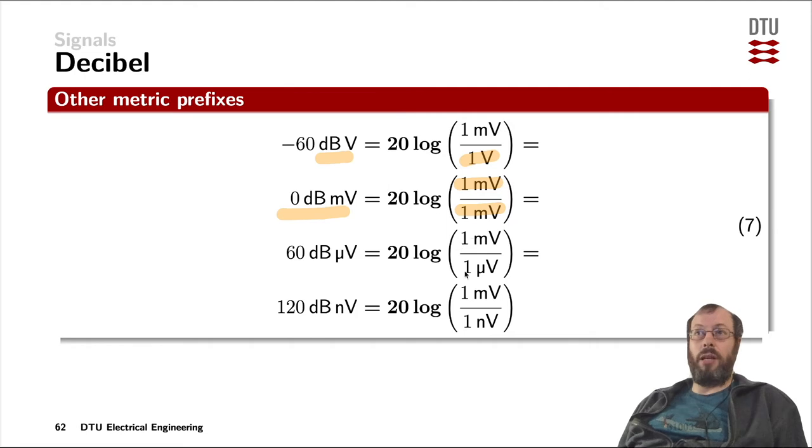That would be a thousand times in microvolts. A factor of 1000 gives you plus 60 dB in terms of microvolts, and another factor of 1000, so a factor of a million in terms of nanovolts. One millivolt divided by one nanovolt gives you 120 dB nanovolts. All of these are very common in engineering.